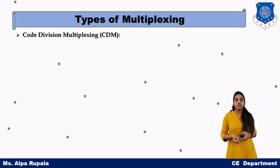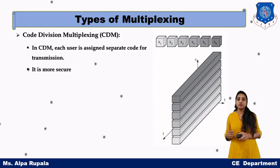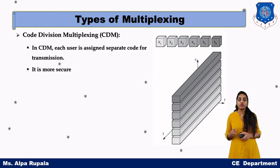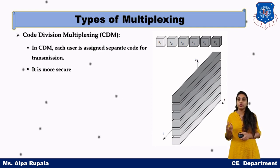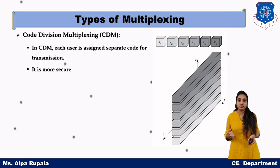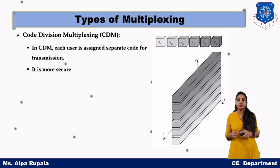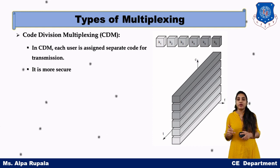Next is CDM, Code Division Multiplexing. CDM is the most secure type because we give a different code to each different user — a separate code for each transmitter and receiver pair. Each transmitter-receiver pair shares a unique code that differs from other pairs. The codes are separated according to orthogonality, meaning two particular codes will be separated by orthogonality.